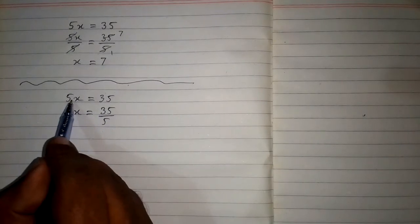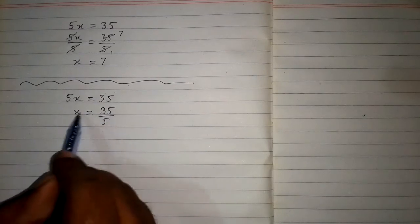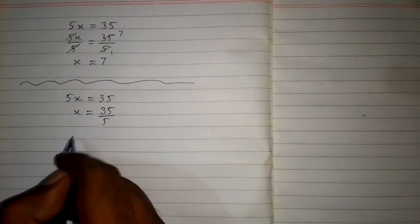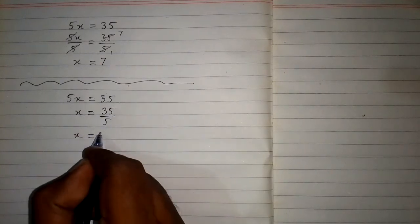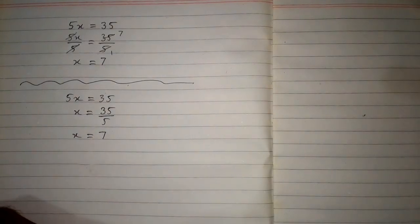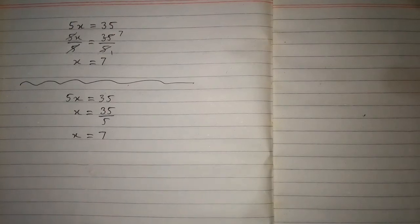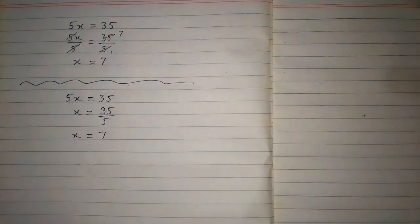So multiplication will become division on the other side of equation. So we have x is equal to 35 upon 5 which is 7. So again we have 7 as a solution of the equation. So we can divide both sides of equation by the same number.